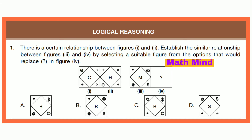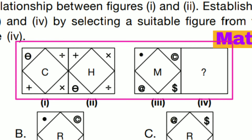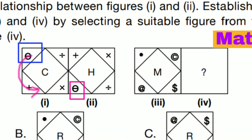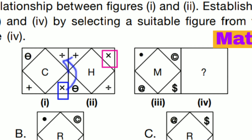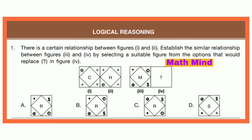Logical reasoning. Question number 1. There is a certain relationship between figure 1 and 2. Establish the similar relationship between figure 3 and 4 by selecting a suitable figure from the options that would replace the question mark in figure 4. This is the given figure. Clearly, this figure E moves one step anti-clockwise, so it reaches here. This plus sign moves one step clockwise, so it reaches here. Similarly, this cross sign moves one step anti-clockwise. And division sign moves one step clockwise. Following the similar pattern, the correct figure is option C. We can replace this figure here. So option C is correct.